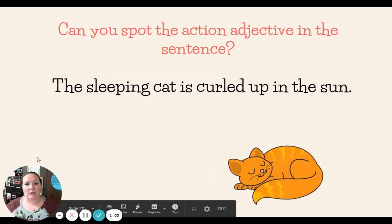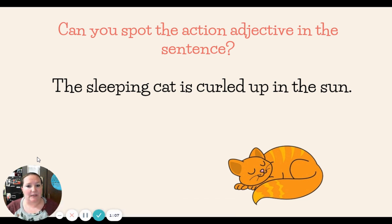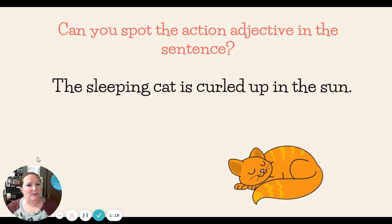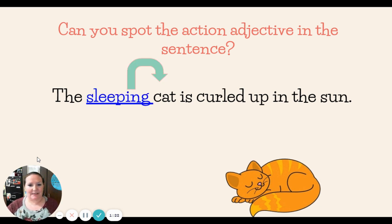Can you spot the action adjective in the sentence today? The sleeping cat is curled up in the sun. Mrs. Davis took a verb, added -ing, and turned it into an adjective. Can you spot the adjective? I bet you said 'sleeping.' Very good. Sleep was the verb. I made it an adjective by adding -ing and placing it before the noun 'cat.'